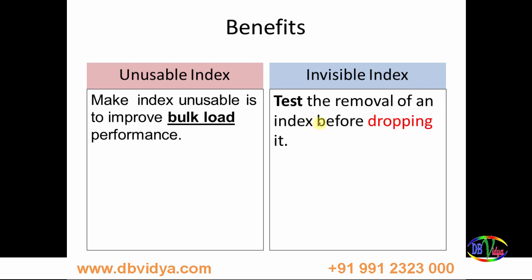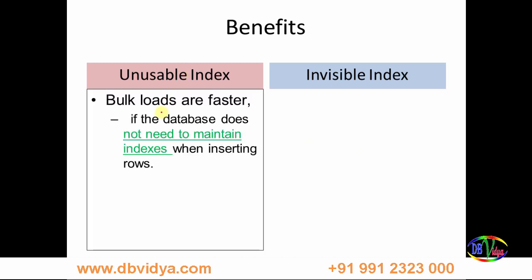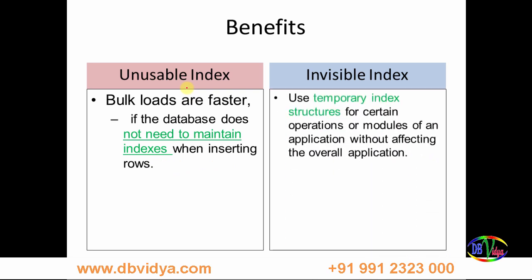So you can test the removal of an index before dropping it. Bulk loads are also faster because the database does not need to maintain the indexes when inserting rows — in this scenario you can make bulk loads faster using an unusable index. For invisible indexes, you can use temporary index structures for certain operations or modules of an application without affecting the overall application, by making an index invisible as a temporary measure.